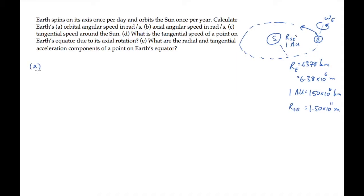Part A of this problem asks us to find the Earth's orbital angular speed in radians per second. So omega se equals delta theta over delta t. The Earth goes through an orbit of 2 pi radians, one complete revolution each year. And we convert this to radians per second using one year equals 3.156 times 10 to the 7th seconds, finding that it equals 1.99 times 10 to the minus 7 radians per second.